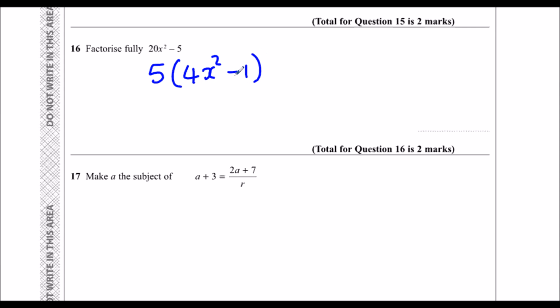That isn't factorized fully because we can factorize this again. This can go into two separate brackets. It's the difference of two squares, so they're both squared numbers. We can have 2x plus 1 and 2x minus 1.